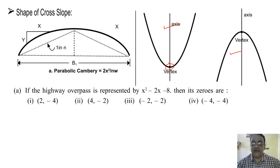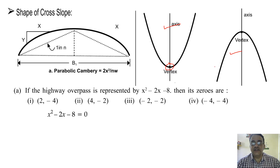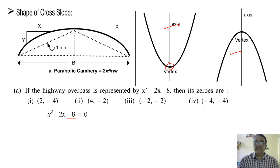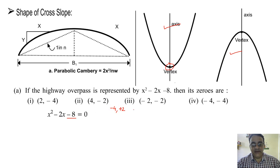If the highway overpass is represented by x squared minus 2x minus 8, its zeros are found by equating with zero. Using the splitting-the-middle-term method, product is minus 8, so we need factors of 8 whose difference is 2: minus 4 and 2. Taking x common and 2 common, we get x minus 4 into x plus 2 equals zero, giving x equals 4 and x equals minus 2.